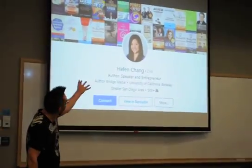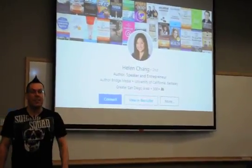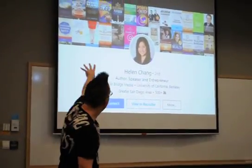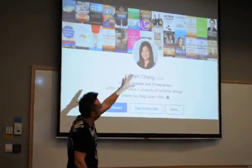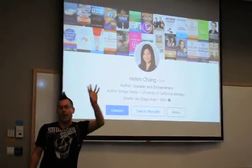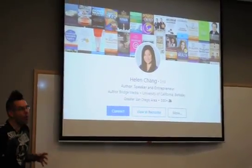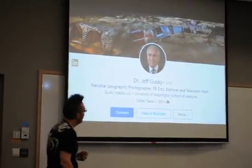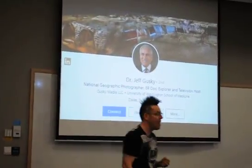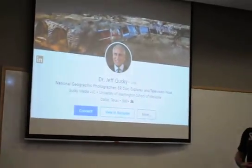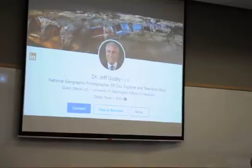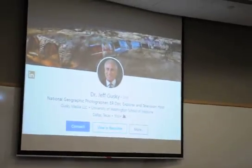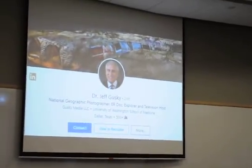And Helen here — she produces books for people. So these are all the clients that she does books for. Very cleverly, she's put all her clients up there. Really cool. I like Dr. Jeff here. He's not lucky enough to see him in a tour — he's at the national geographic rack. So he uses one of his pictures in the background. Very straightforward, but very impactful.